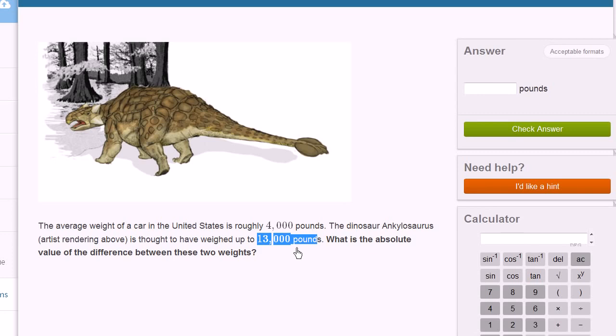You could calculate the difference between these two weights. You could take the smaller and subtract from the larger. So if you take 4,000 from 13,000, the difference would be 9,000 pounds. The absolute value of 9,000 is 9,000.